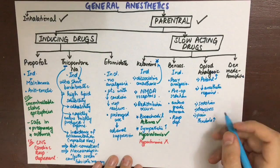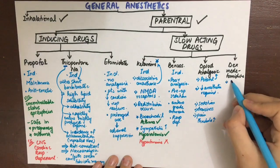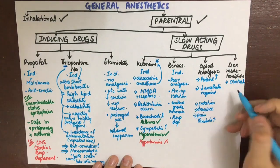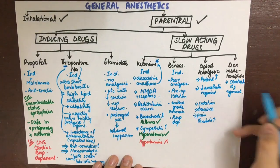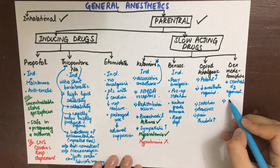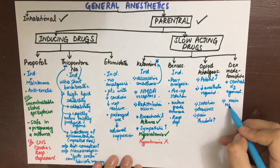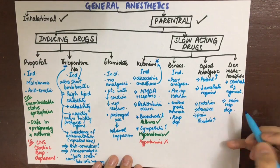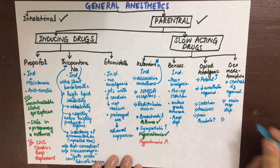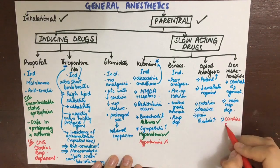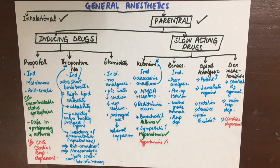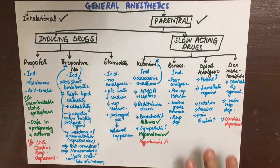Lastly, we have dexmedetomidine. It is a central alpha-2 agonist, meaning it decreases the release of norepinephrine in the brain and causes minimum respiratory and cardiac depression.